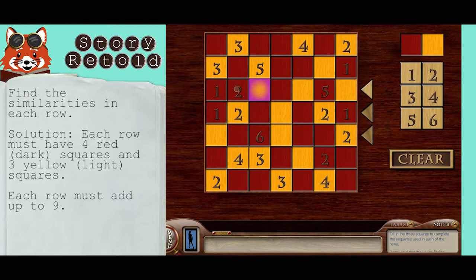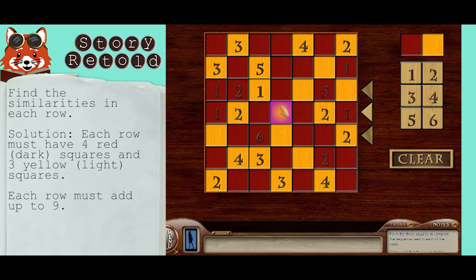One plus two is three, plus five is eight, so you need just one to make nine. One plus two is three, plus three is six, so we need three here.